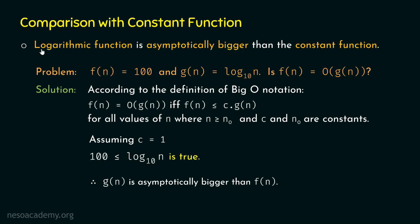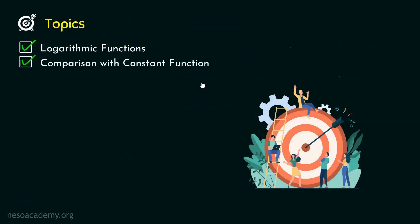Hence, logarithmic functions are asymptotically bigger than constant functions — we just proved this. We are now done with the comparison of logarithmic functions and constant functions. Logarithmic functions are asymptotically bigger than constant functions, and constant functions are asymptotically bigger than decrement functions. Therefore, logarithmic functions are also asymptotically bigger than decrement functions. This is the final conclusion.